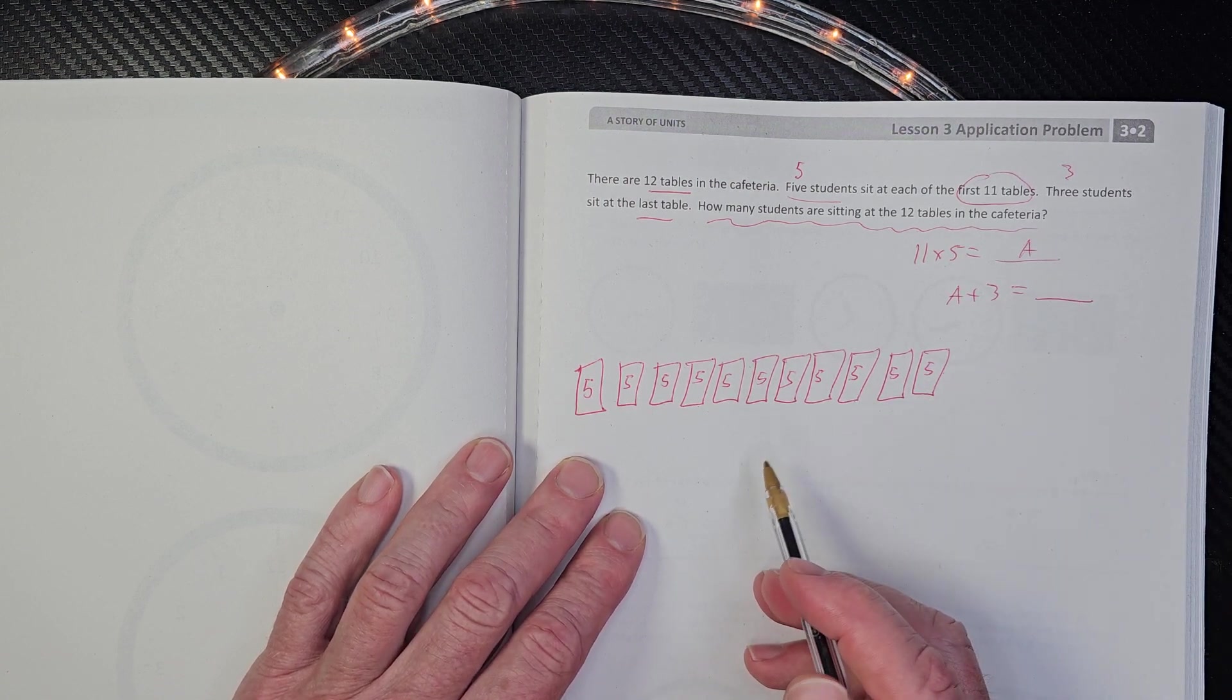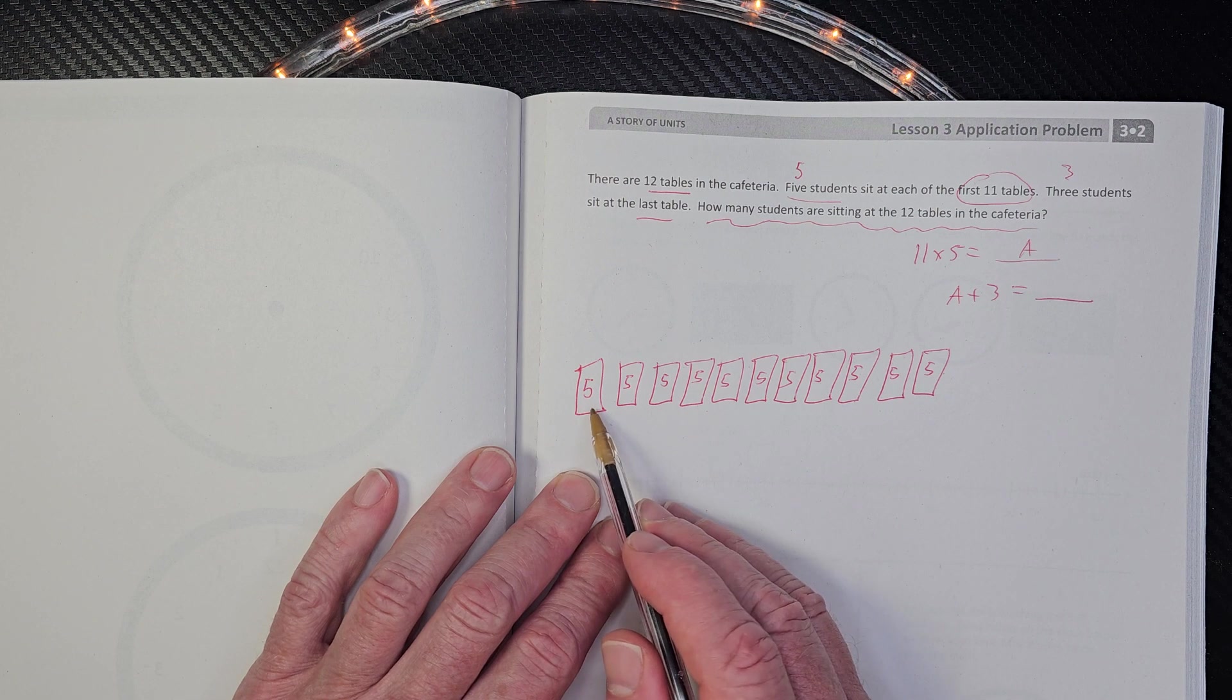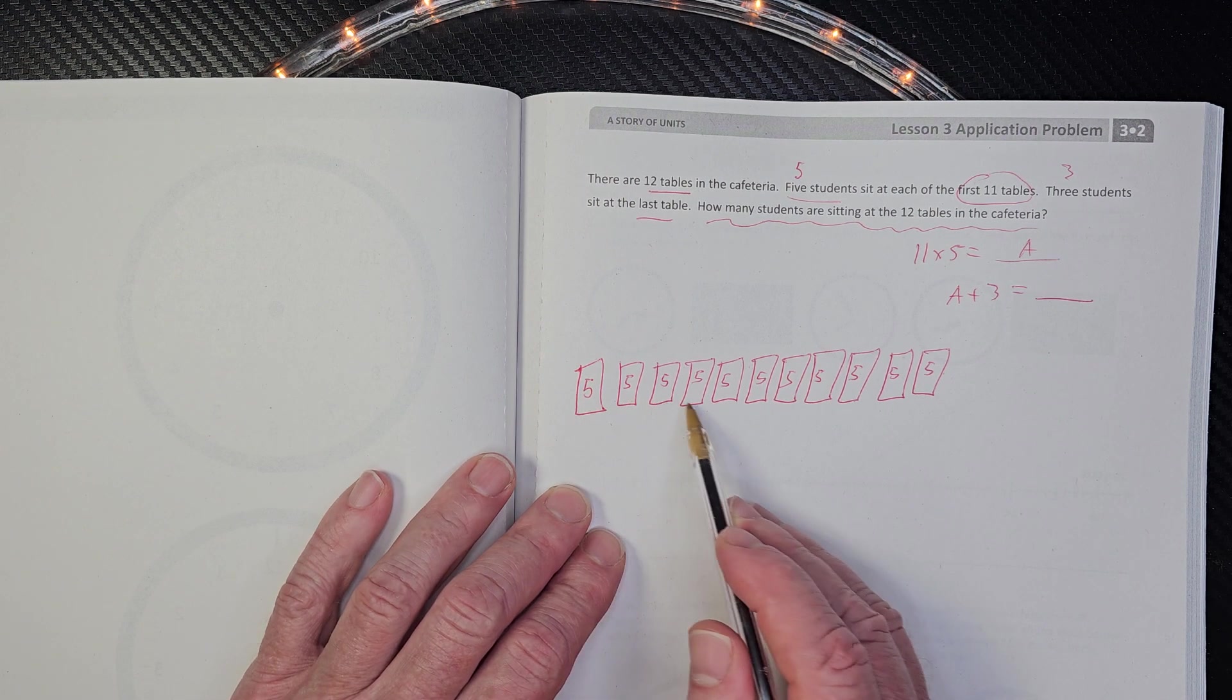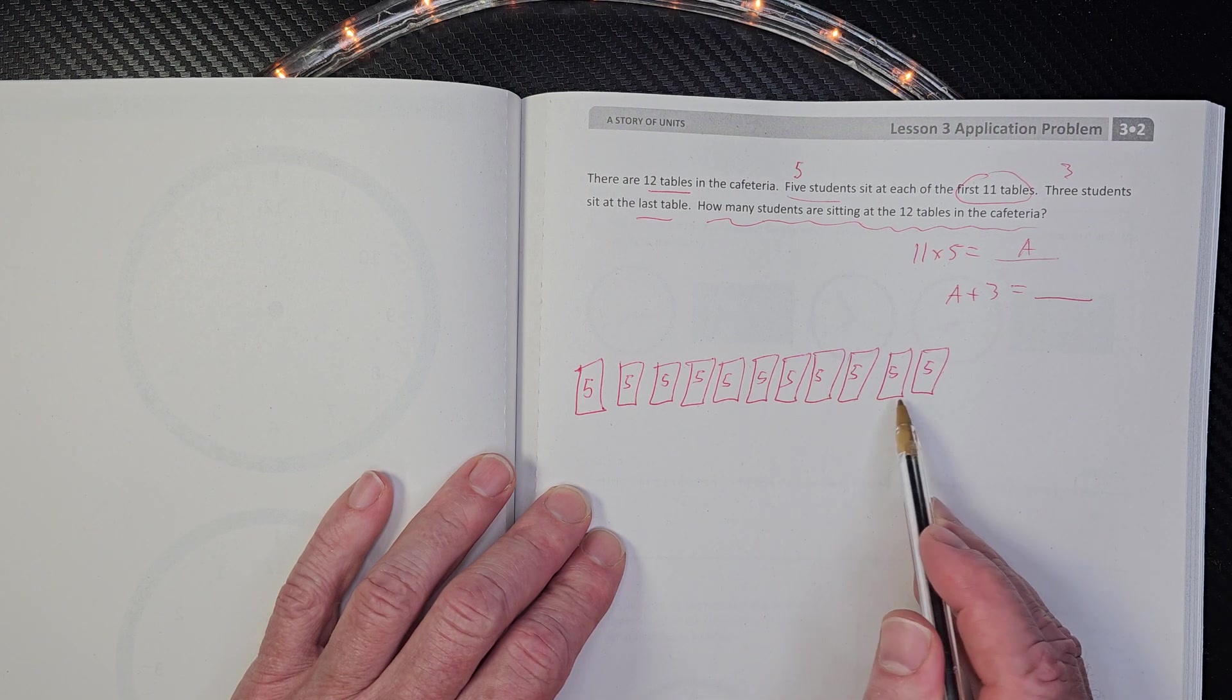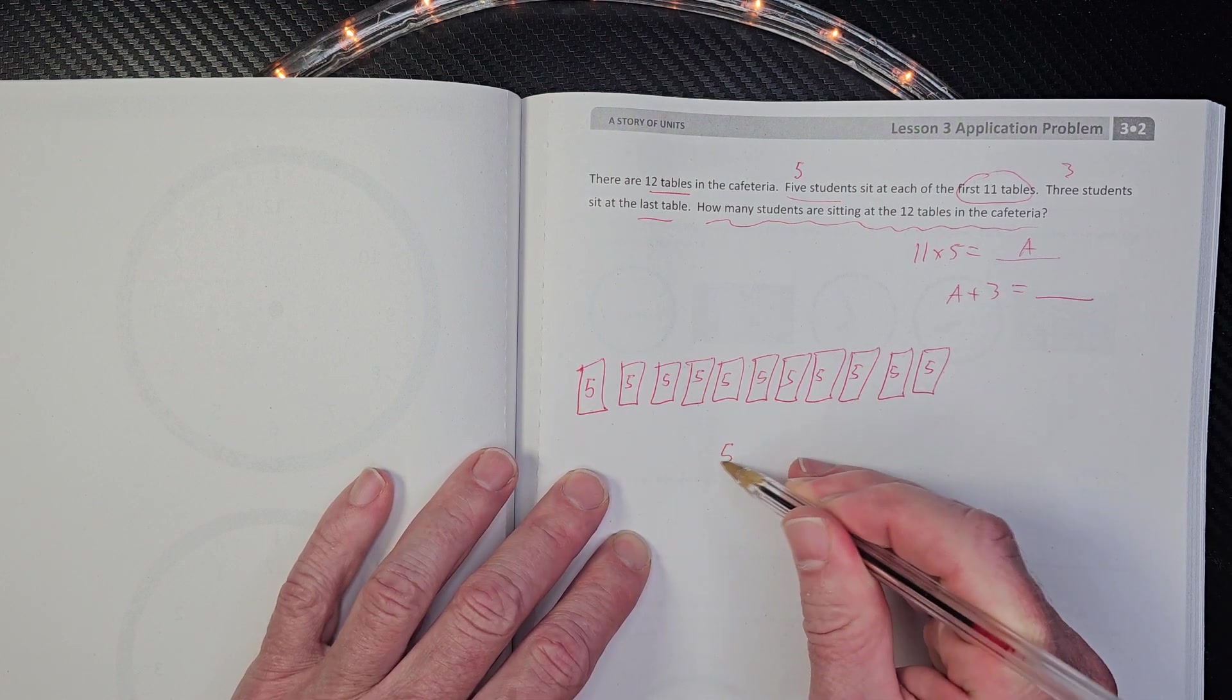So now I'm going to go ahead and count this out. So we can count by five. So those are kind of fun to count by. Five, 10, 15, 20, 25, 30, 35, 40, 45, 50, 55. So we have 55 students right here.